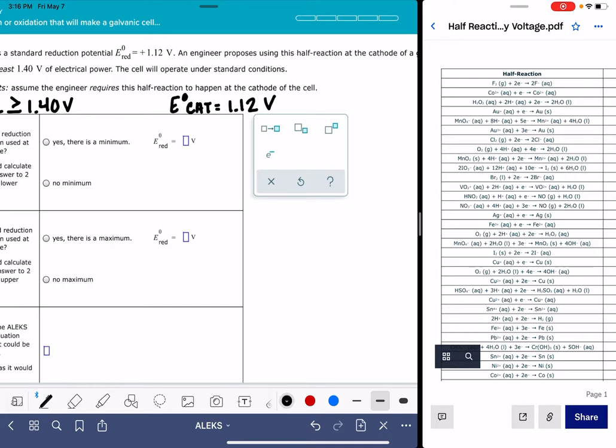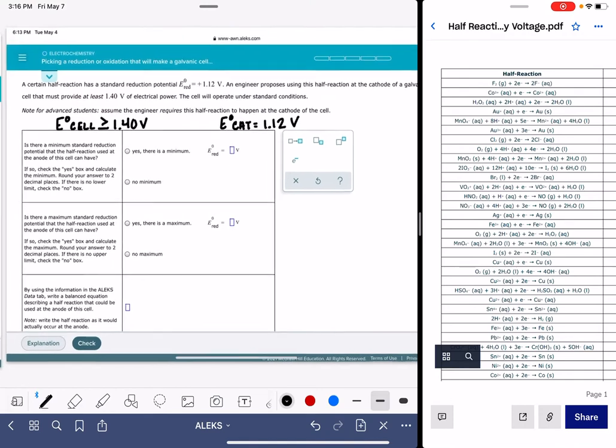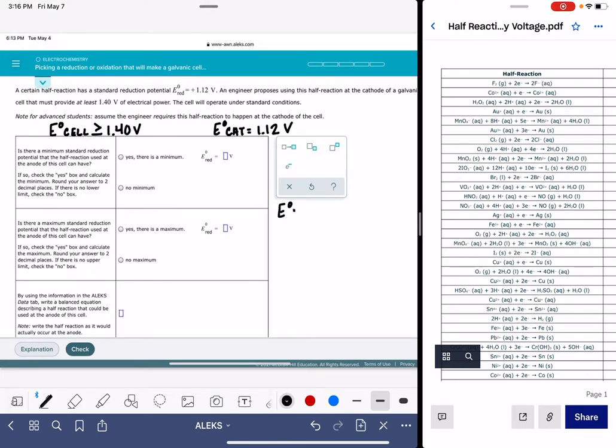And then we're asked to figure out what kind of options we have in terms of the anode. So the first thing that we're going to do is write out our E cell equation. E cell is the E cathode minus E anode. And we know that the cathode minus the anode needs to be at least 1.40 volts.